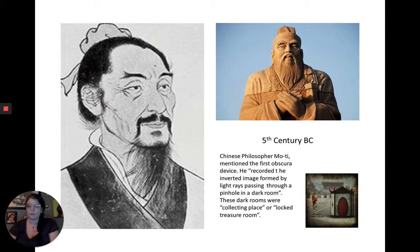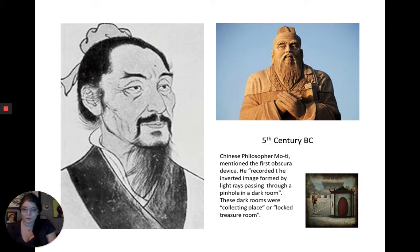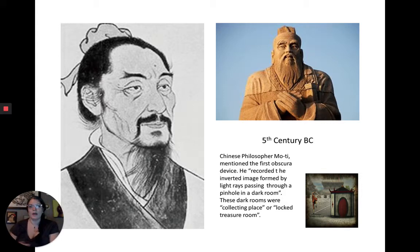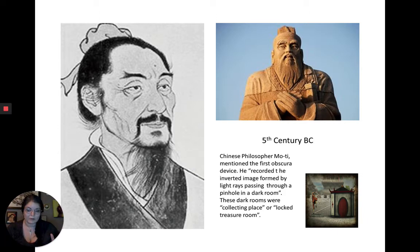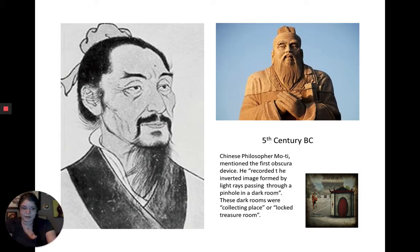The first important discoveries related to the history of photography actually happened as early as the 5th century BC in China. Chinese philosopher Mo Ti — sometimes called Mo Z when translated to English — is the first person to mention the idea of an obscura device, which we later know as a camera obscura. He recorded the inverted image formed by light rays passing through a pinhole in a dark room, sometimes called the 'locked treasure room' or 'collecting place.' He's essentially the inventor of pinhole photography.